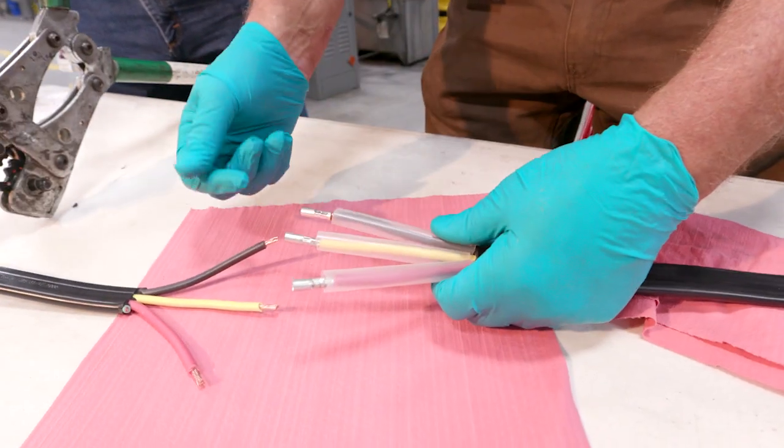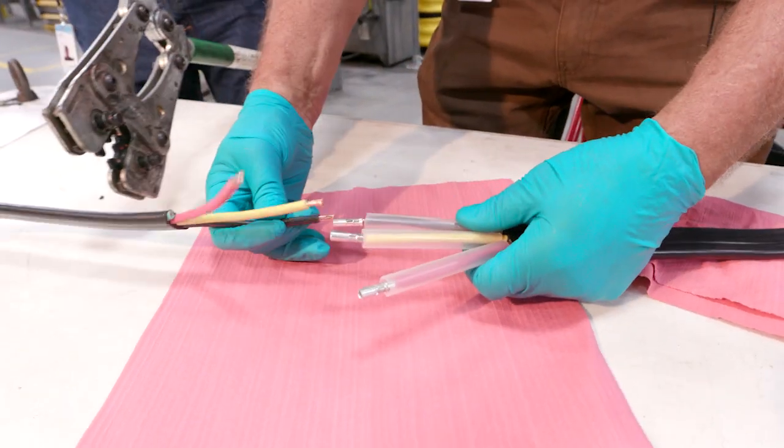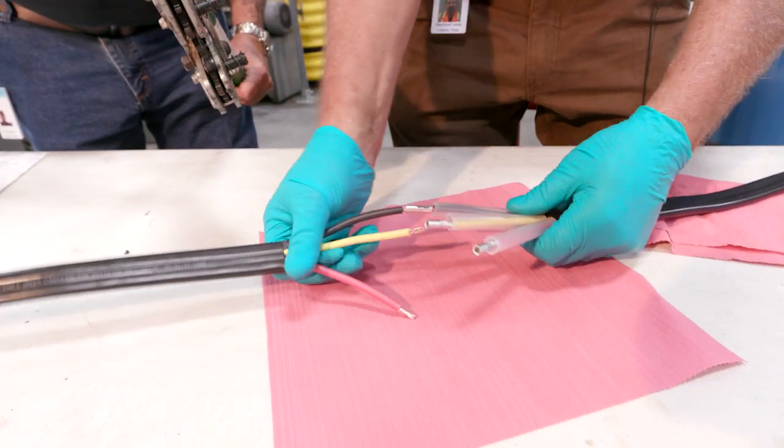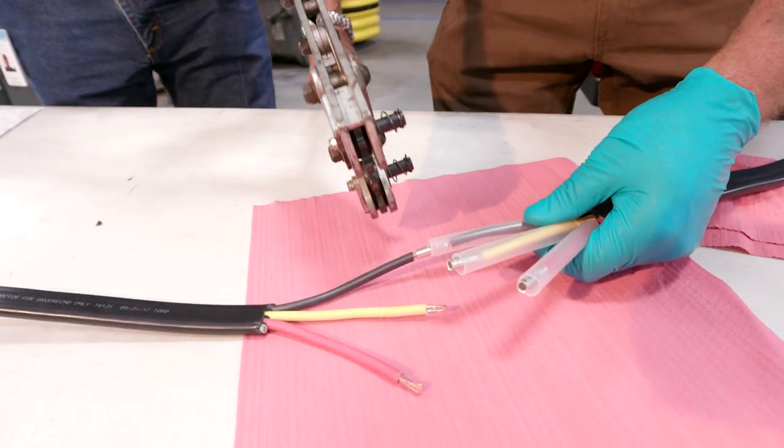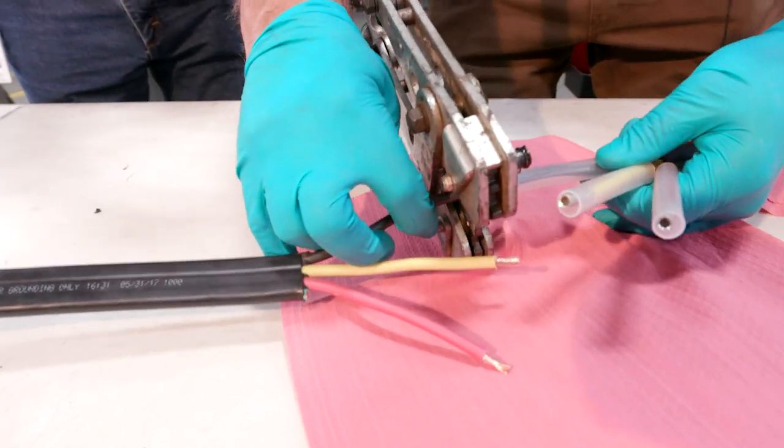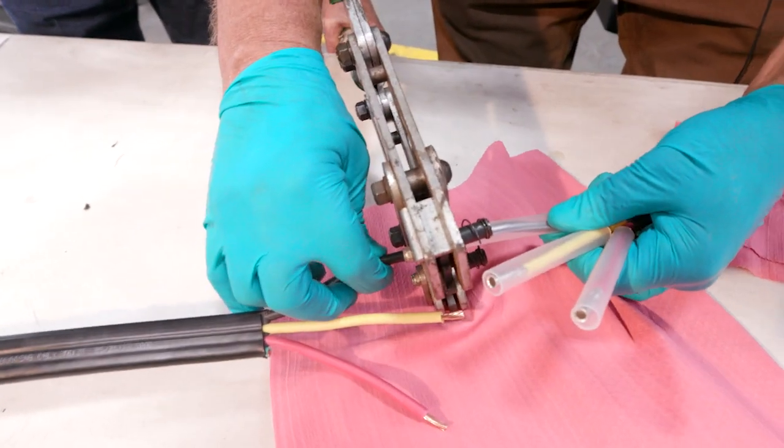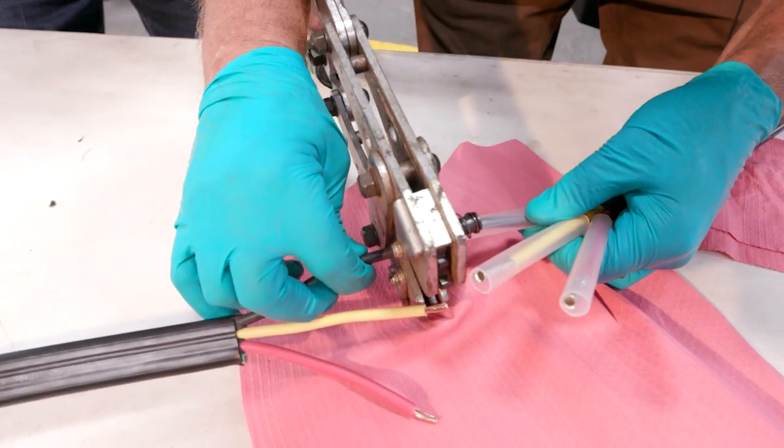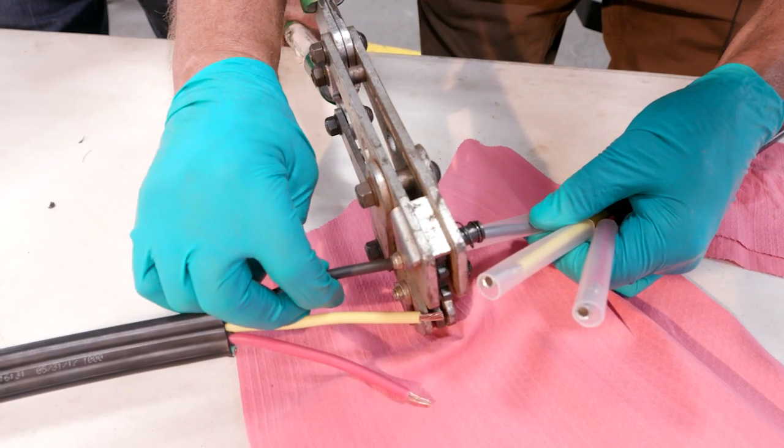Color code: black, yellow, red. We're going to take our black wire, insert it here. We're going to take our crimpers. Crimp it right there. Are we there? Yep, go ahead.